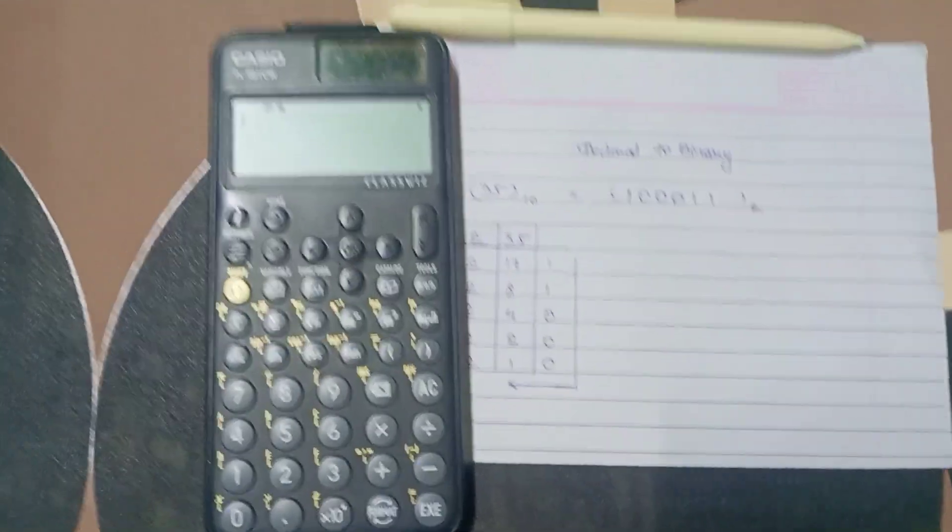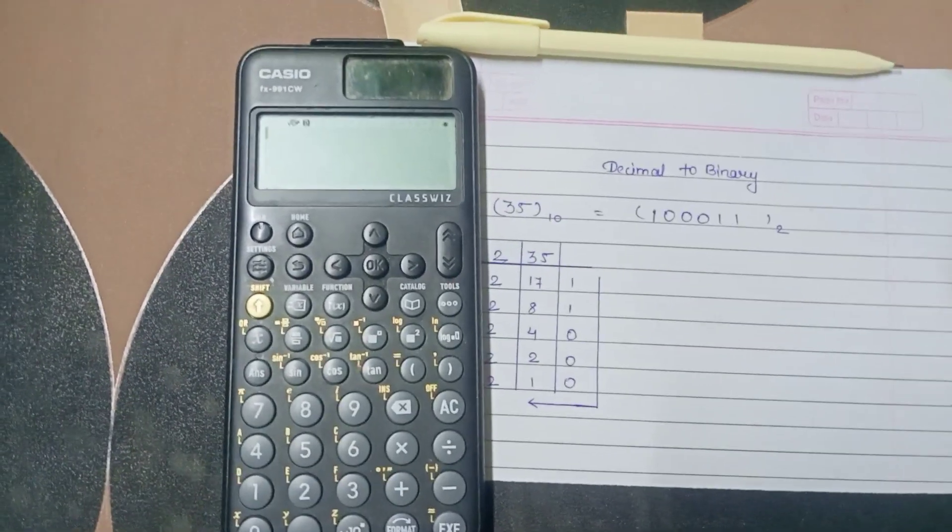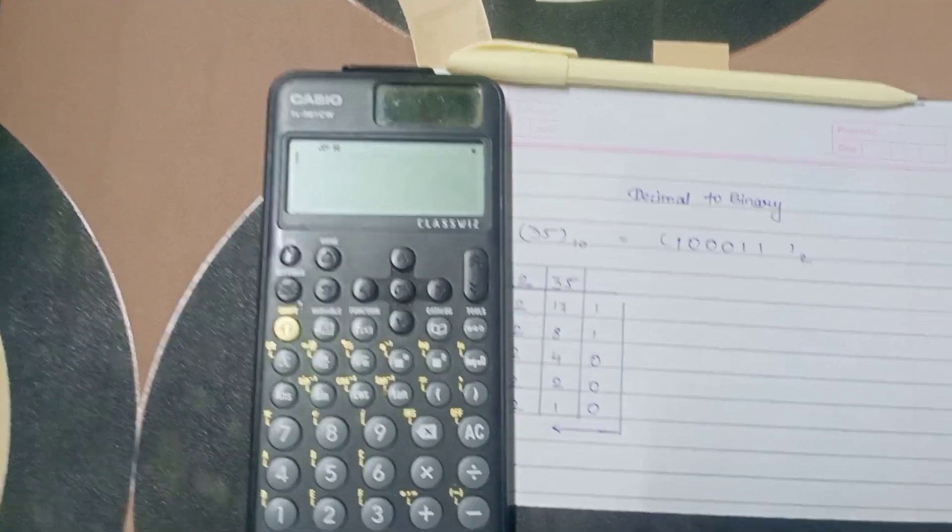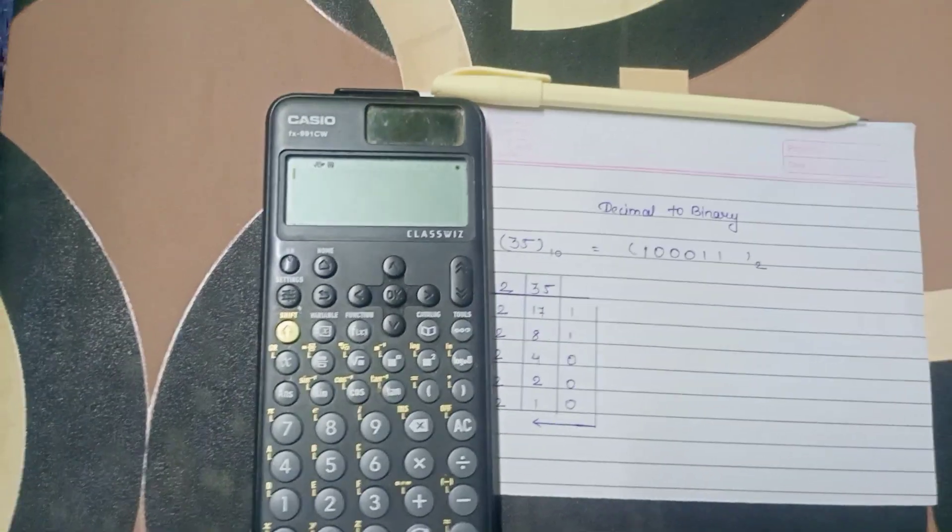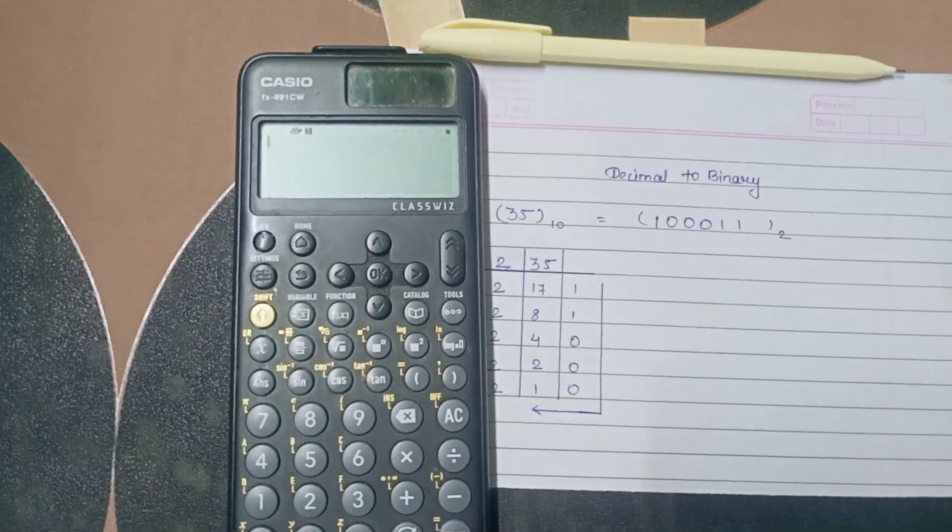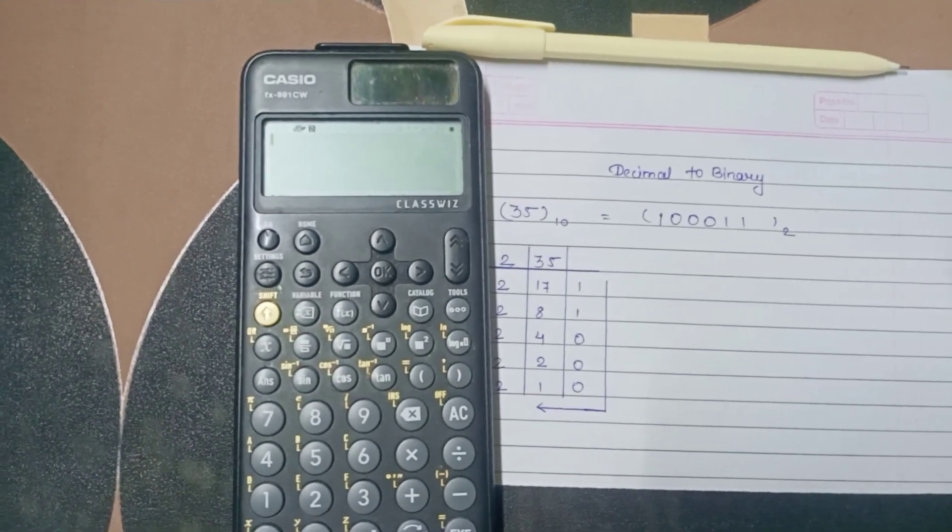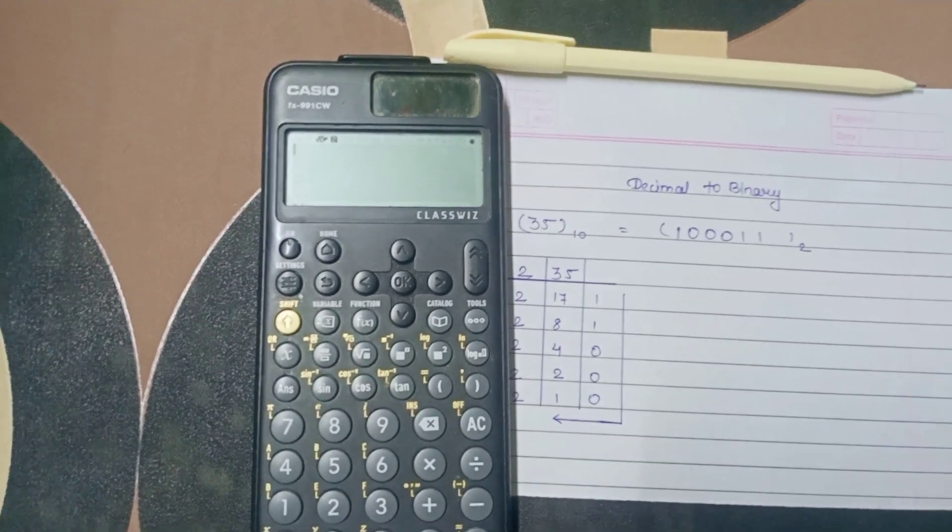Hello friends, today we are going to see how to use CASIO fx-991CW Calculator to convert a decimal number into binary number.